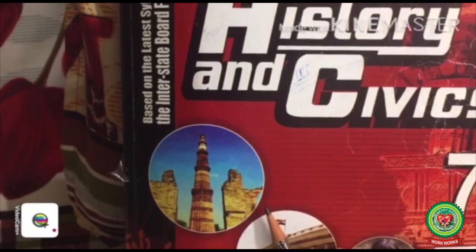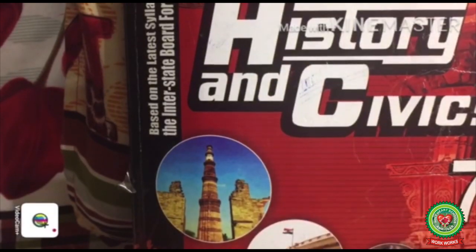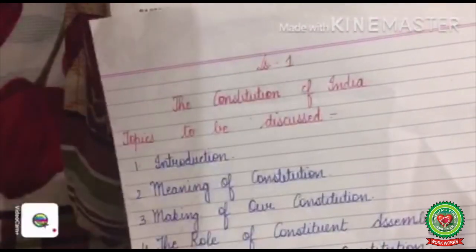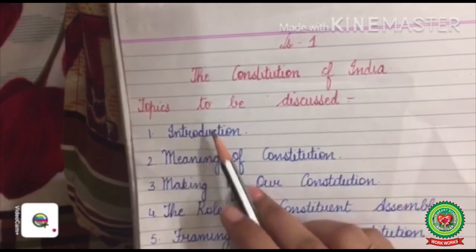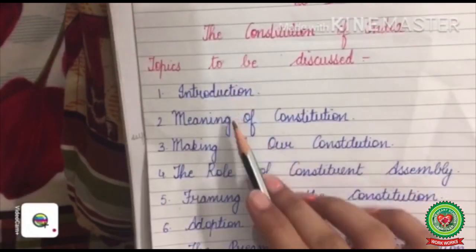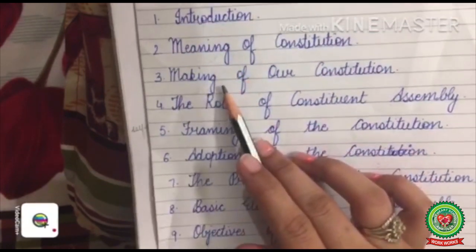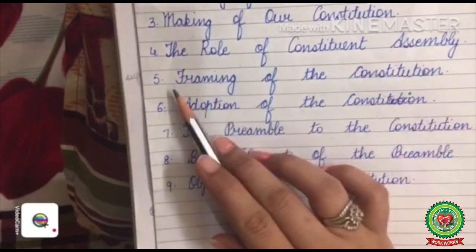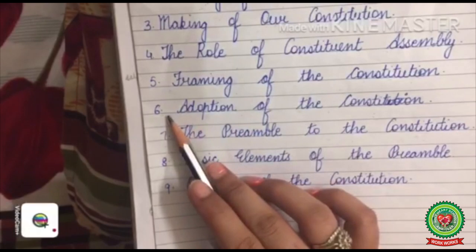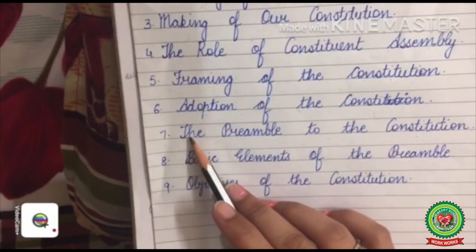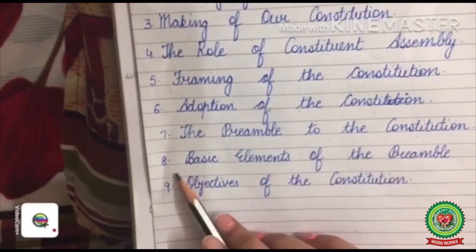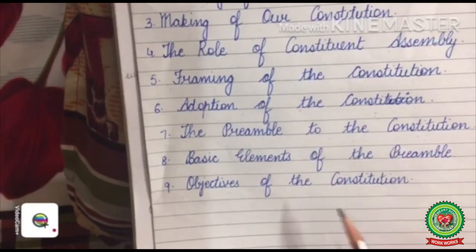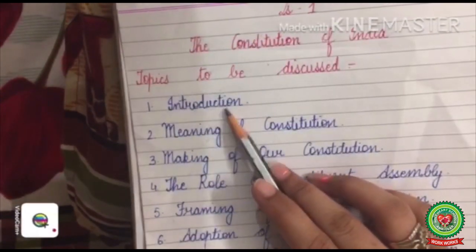Good morning students. Take out your history and civics book, class 7th. We have started with lesson number one of civics: the Constitution of India. The topics to be discussed in this lesson are: number one, its introduction; number two, meaning of Constitution; number three, making of our Constitution; number four, the role of constituent assembly; number five, framing of the Constitution; number six, adoption of the Constitution; number seven, the preamble to the Constitution; number eight, basic elements of the preamble; number nine, objectives of the Constitution.